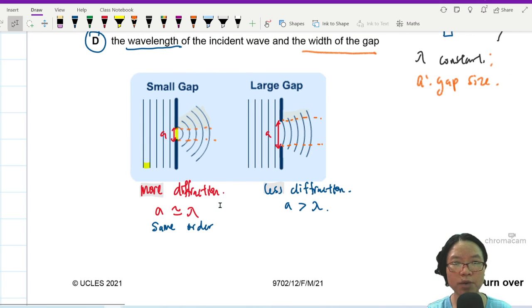So the only thing that will affect the diffraction would be wavelength should be same order as the gap of the width, the width of the gap. That's it for this question.